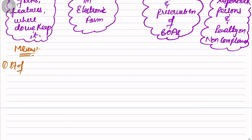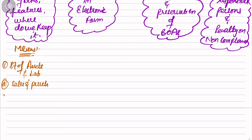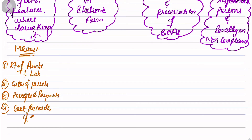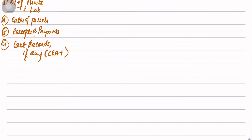Write: (1) Statement of assets and liabilities, (2) sales and purchases, (3) receipts and payments, (4) cost records - if any. You can also write CRA-1 against cost records. The more and more you repeat things, it will go embedded in your head. This is called the meaning of Books of Accounts - point number one.